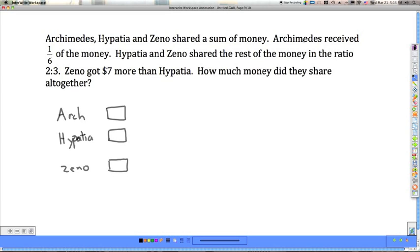Archimedes, it says, received 1/6 of the money. Well, if I use that piece of information, what I know is that Archimedes has one unit. If that's 1/6, then using a little bit of logic, that tells me...